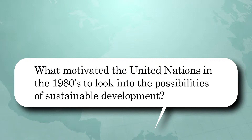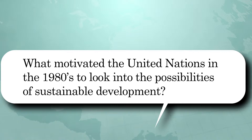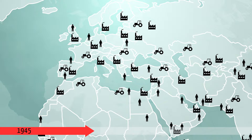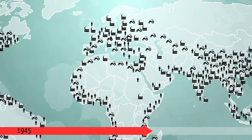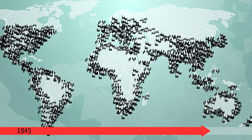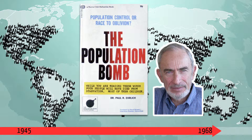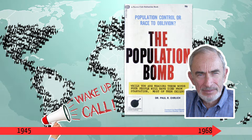What motivated the United Nations in the 1980s to look into the possibilities of sustainable development? The interest in sustainable development that commenced in the 1970s was directly related to the population and welfare growth that occurred since the 1940s. It became clear that long-term growth was akin to an impossible dream. The Population Bomb of 1968, written by Paul Ehrlich, was one of the books that provided the wake-up call. He forecast population growth for future decades and predicated a breakdown in the world's ability to feed itself.